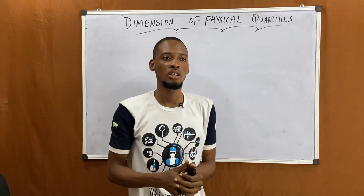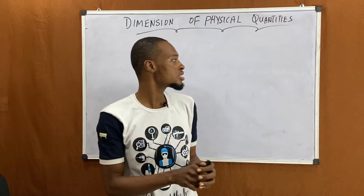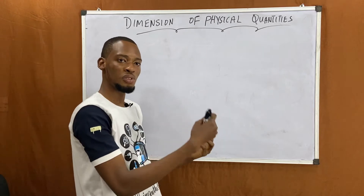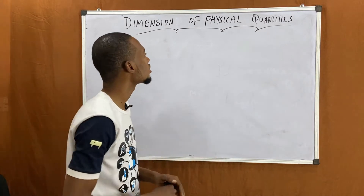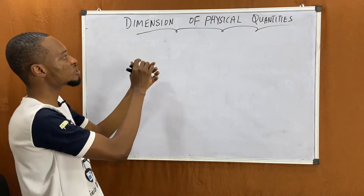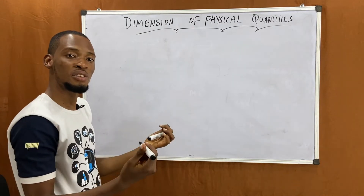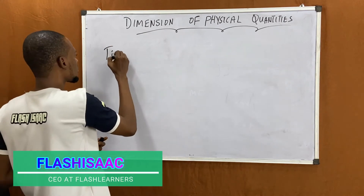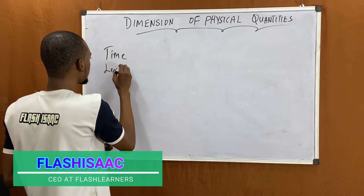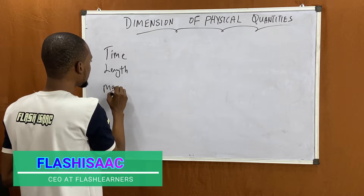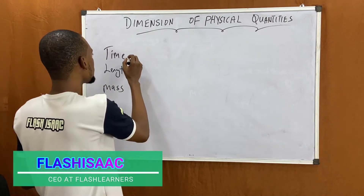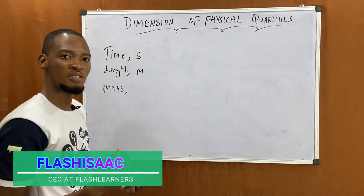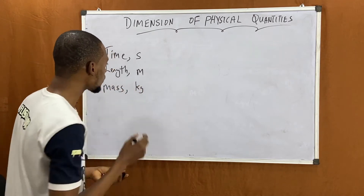Welcome to Physics Class with Flash Isaac. In my previous video on quantities and units, I told you that we have two types of quantities: fundamental quantities and derived quantities. You can check out that video if you haven't watched it. Today I'll be treating dimensions of physical quantities. The three main fundamental quantities are time, length, and mass. The unit of time is seconds, the unit of length is meters, and the unit of mass is kilograms.